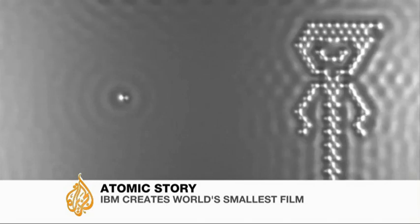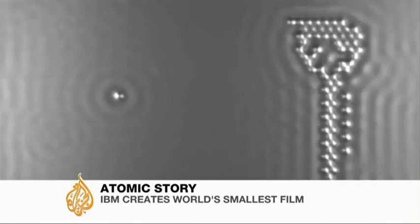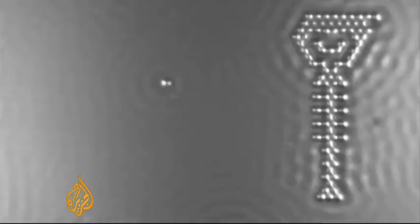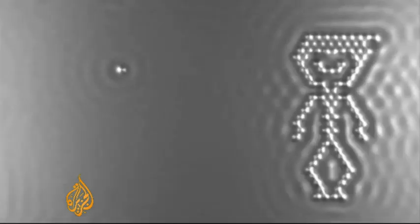Meet the world's smallest film star. The ball he's playing with is actually a single atom. The film is so small it had to be magnified more than 100 million times to be visible to the human eye. That's the equivalent of supersizing an apple to the size of planet Earth.